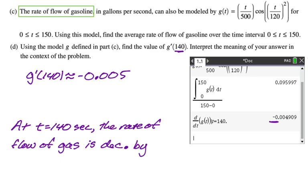And then what is it decreasing by? It's decreasing by the value that we found. So by 0.005. And then what are the units? Well, the units of G are gallons per second and time is measured in seconds. So this will be gallons per second per second. And that's going to be our interpretation of this in the context of the problem.